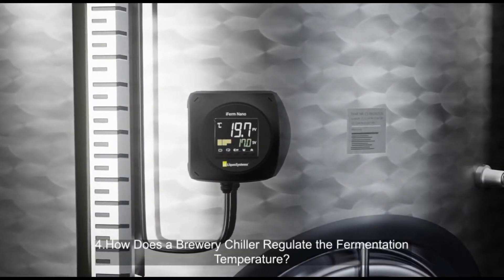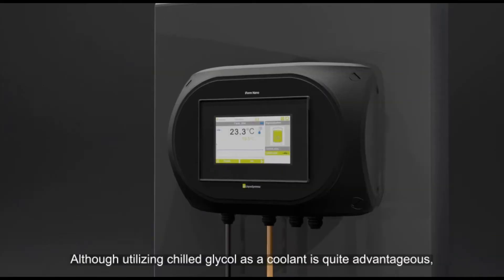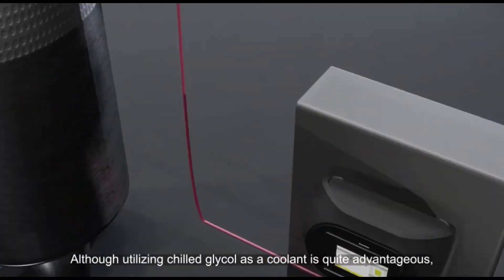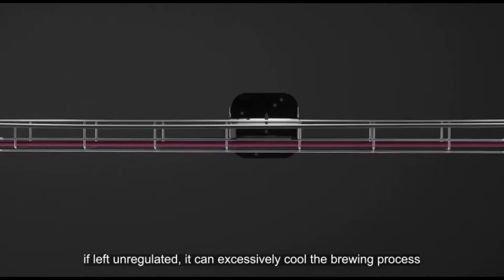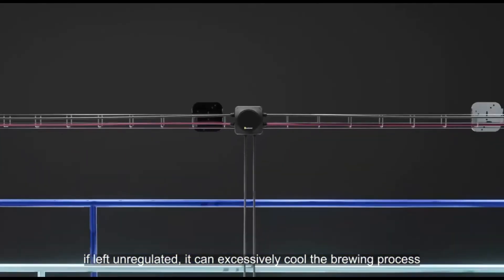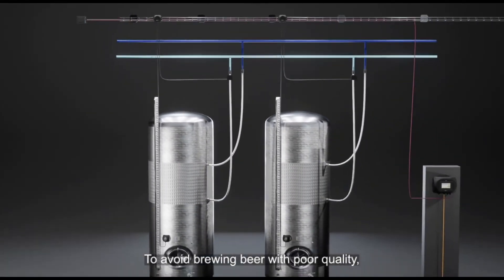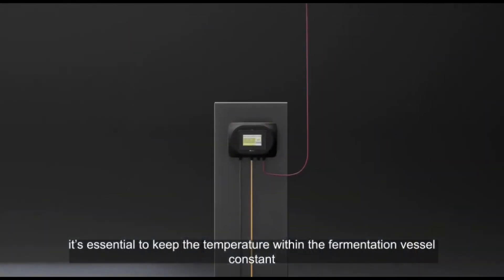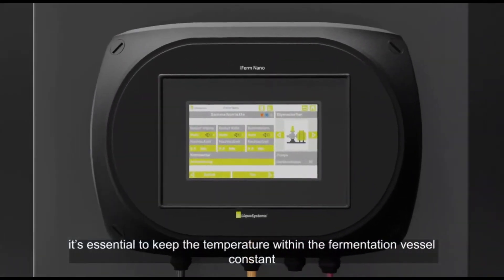How does a brewery chiller regulate the fermentation temperature? Although utilizing chilled glycol as a coolant is quite advantageous, if left unregulated, it can excessively cool the brewing process. To avoid brewing beer with poor quality, it's essential to keep the temperature within the fermentation vessel constant.